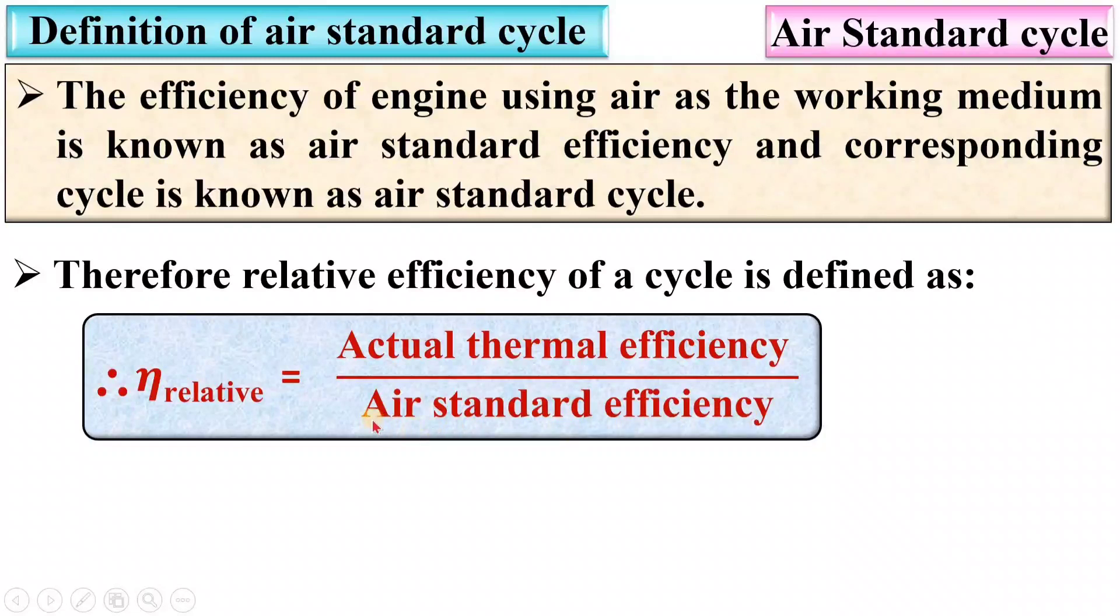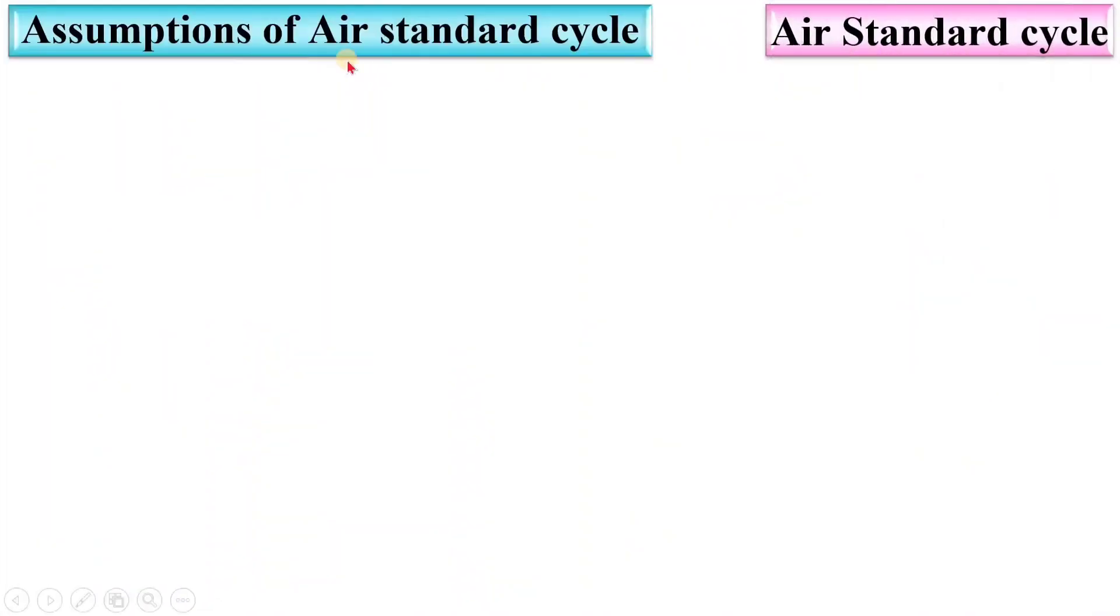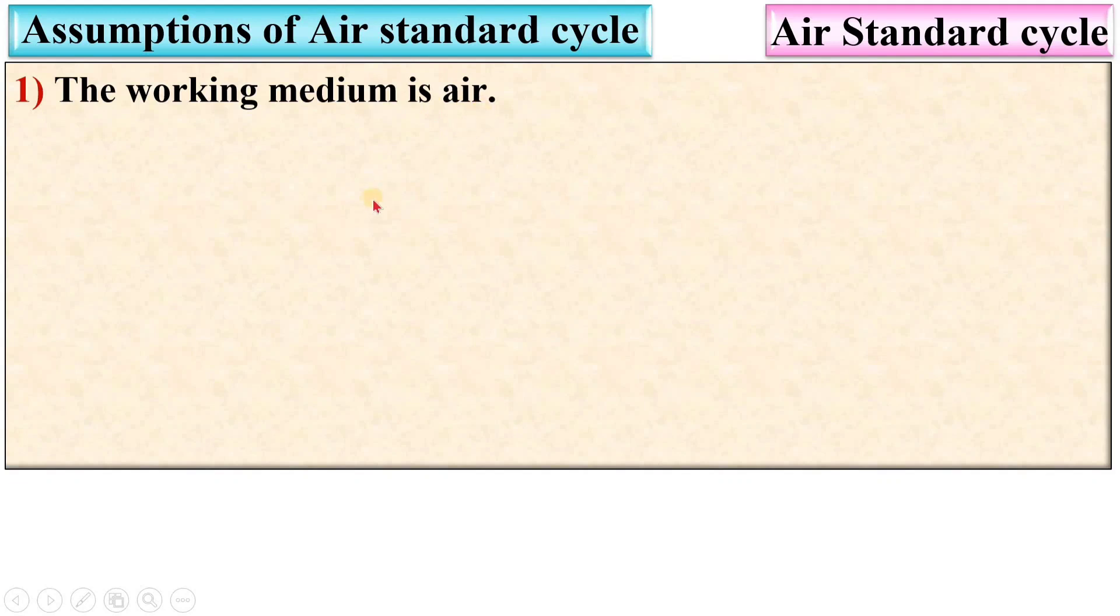You know that air standard efficiency is actually ideal efficiency where working medium is air, and in actual thermal efficiency, the working medium is not air. Now, assumptions of air standard cycle. The working medium is air.